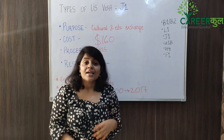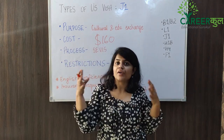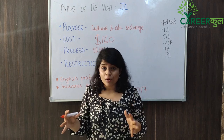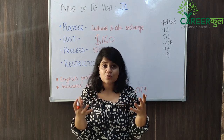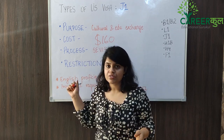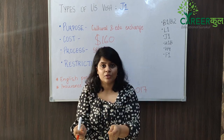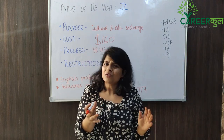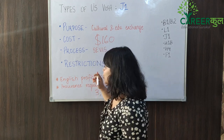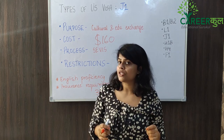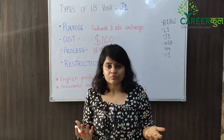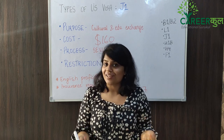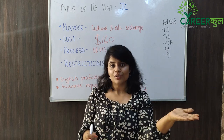Restrictions — very important. The J1 visa duration ranges from 3 months to 5 years or more, depending upon which program you are going for. There are some restrictions compared to other student visas like the F1 visa, and these restrictions depend upon institute to institute. Two major important things: first, you need to be proficient in English and speak it properly. Why? Because if you are going to the US on an education exchange program, you need to conduct research or training properly.